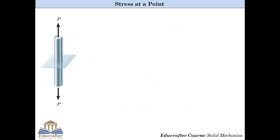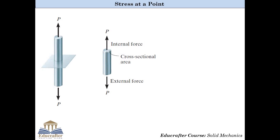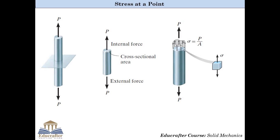Let us take one basic example. A rod of certain length is acted upon by a tensile load P at both ends, and the cross-sectional area of the rod is capital A. Now, cut the rod using the plane perpendicular to the Z axis and analyze the stress distribution over the cross section. 90% of students usually say the normal stress induced in the rod is P divided by A — but this is an incorrect statement. P by A is not the stress at a point inside the rod; rather it indicates the average value of one of the stress components over the entire cross section.